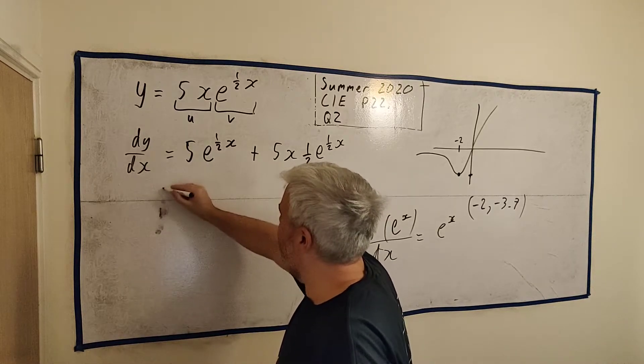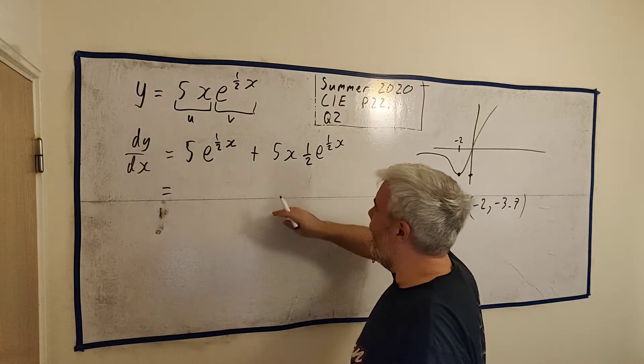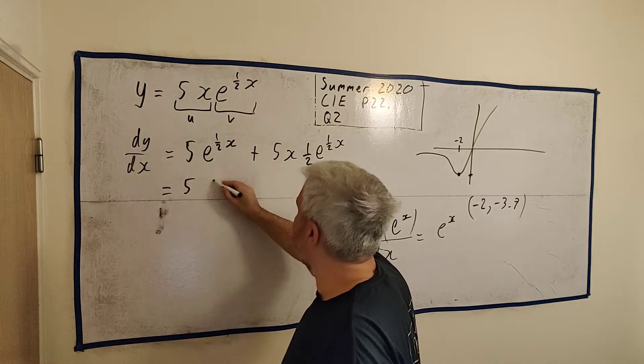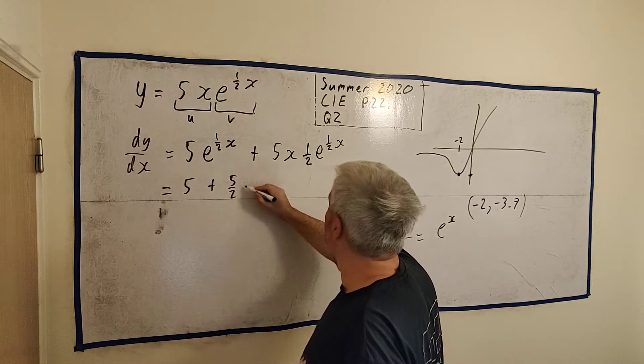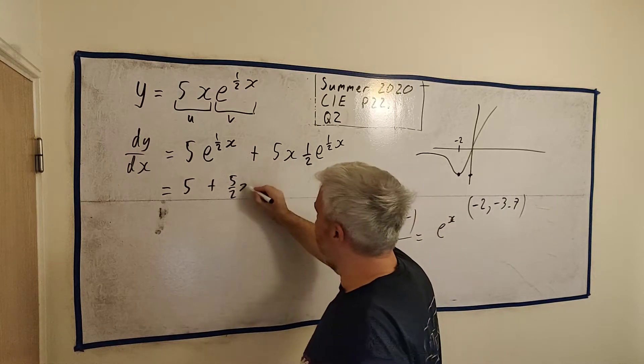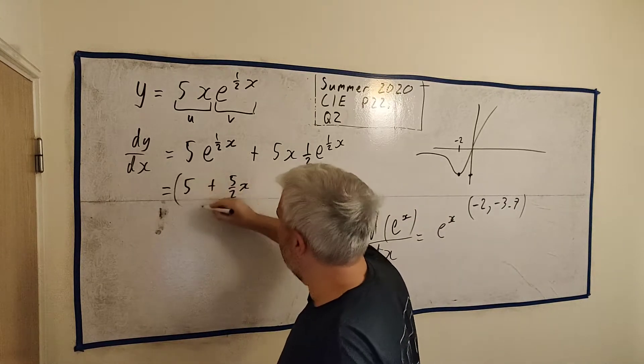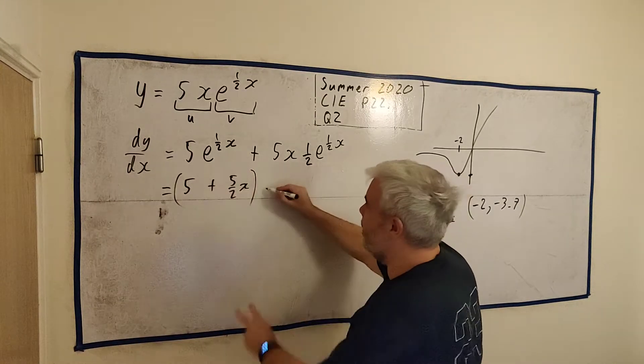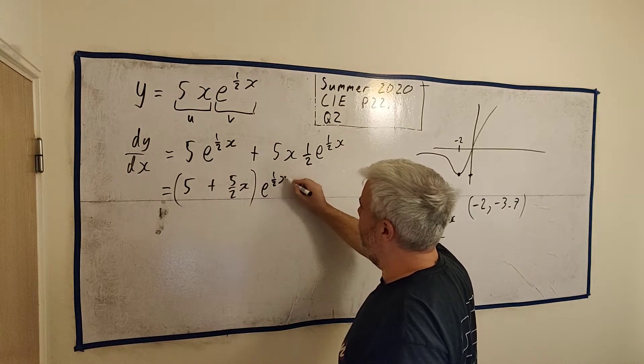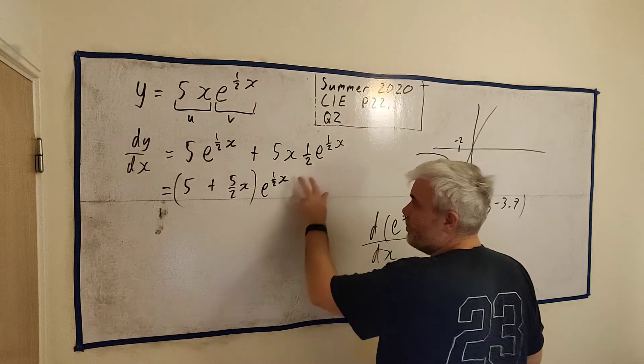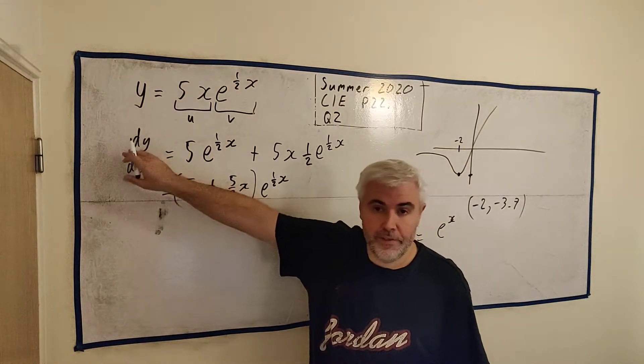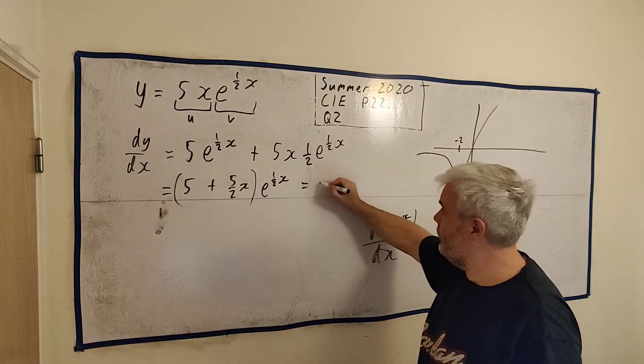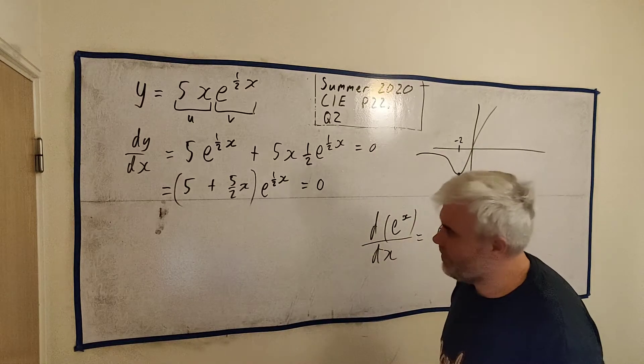Let's put this together. And we get five here. Plus from this one, we would get five over two x. And both of them have e to a half x on them. So this is just this one cleaned up. And remember what we know about stationary points. The derivative is equal to zero. So this we can already solve this.